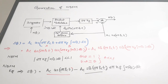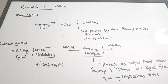Next we look at the wide band frequency modulated wave. The main difference between narrow band FM and wide band FM is in the frequency range: narrow band FM operates at a lower frequency range, while wide band FM has a larger frequency range. Additionally, the modulation index is less than 1 for narrow band FM, whereas for wide band FM it is much greater than 1.